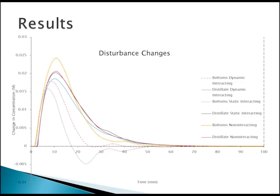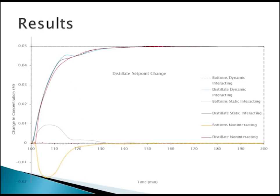This next graph is really interesting. It shows just the distillate set point change. With a non-interacting controller, we get a decent change in our distillate, but we also get a significant unwanted change in our bottoms concentration. Even adding a static interacting controller still produces a significant change in the bottoms. But with our dynamic interacting controller — shown as the red dotted line — our distillate stream tracks the set point change nicely, and our bottoms stream barely changed at all. There is a very clear advantage to the dynamic interacting controller here.